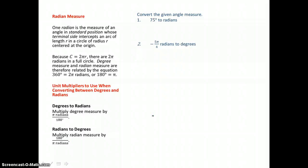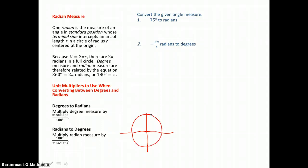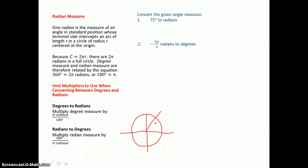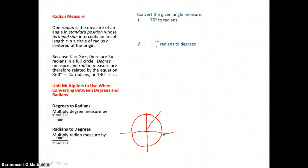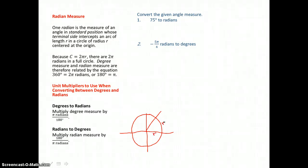Next we're going to convert the given angle measure to radian measure. We can measure angles in two different units: degrees or radians. To define radians, we draw a circle centered at the origin on the coordinate plane. One radian is the measure of an angle in standard position whose terminal side intercepts an arc of length r in a circle of radius r centered at the origin. So this radius and this arc are the same length, making this one radian.